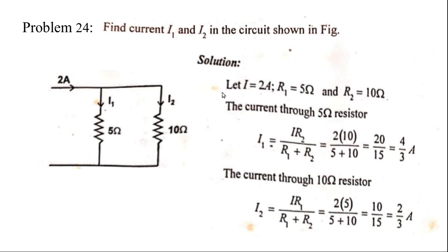Just substitute the values: R2 is 10, so I1 equals 2 times 10 divided by 5 plus 10, giving 4 by 3. And I2 is equal to I times R1 divided by R1 plus R2, so 2 times 5 divided by R1 plus R2, giving 2 by 3. We will see a few more problems in the next video. Thank you.